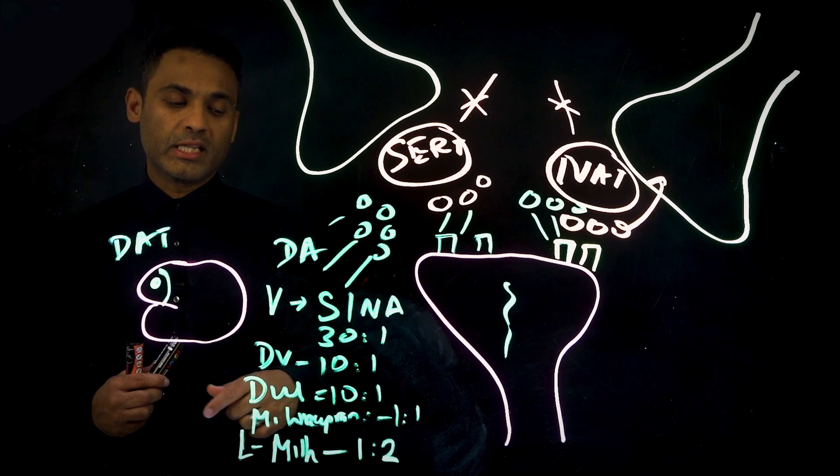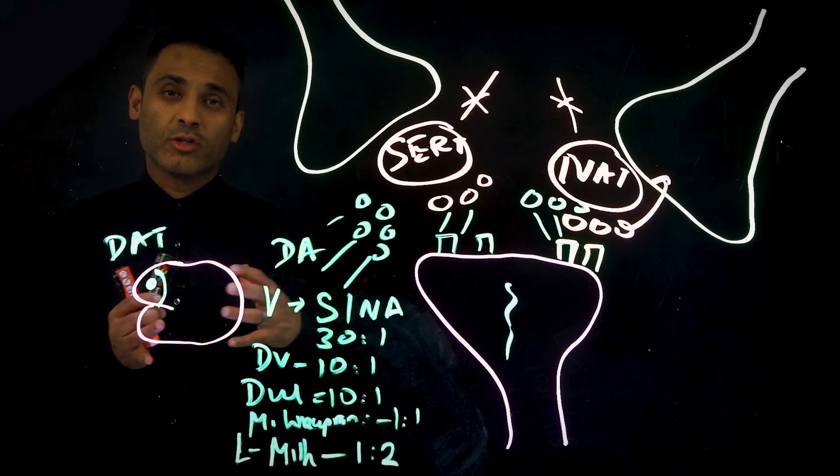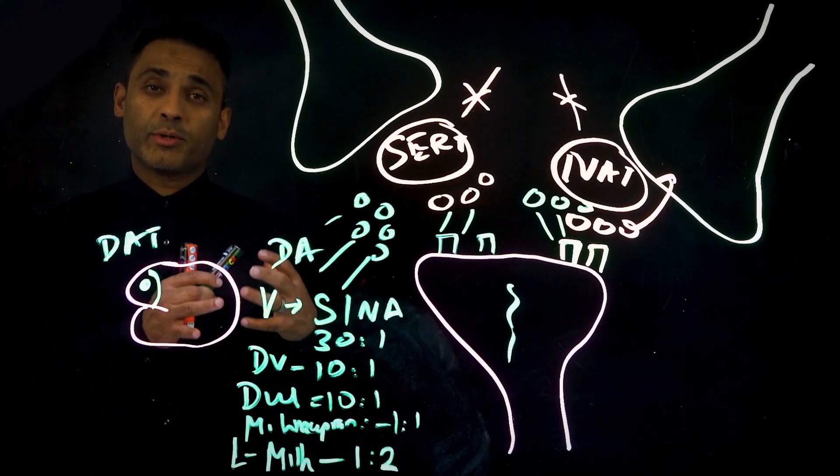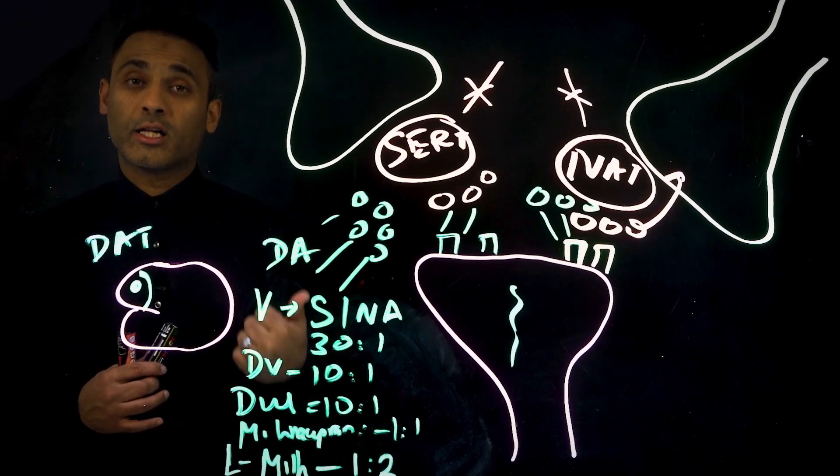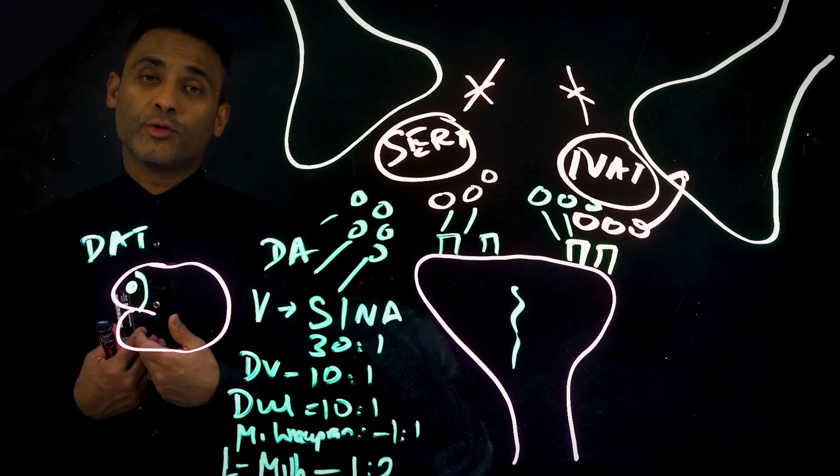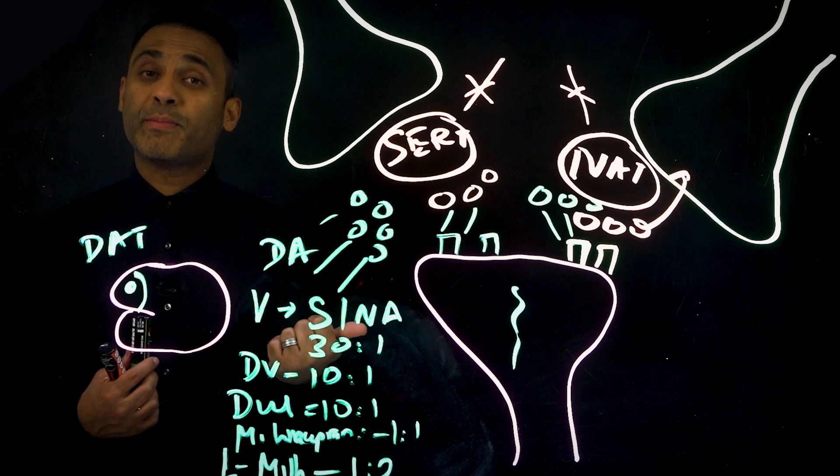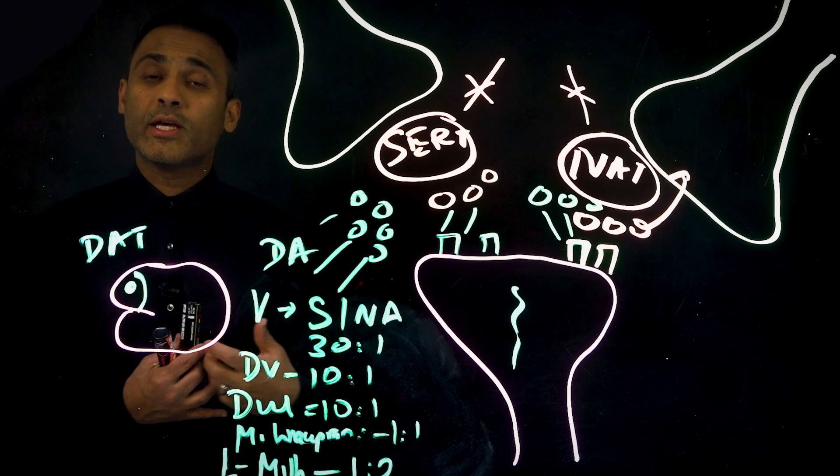Milnacipran and levomilnacipran, because of their differential significant noradrenergic potentiation, can be very useful agents in fibromyalgia. They're also useful in peripheral neuropathic pain, for example diabetic neuropathy.